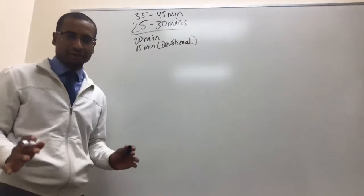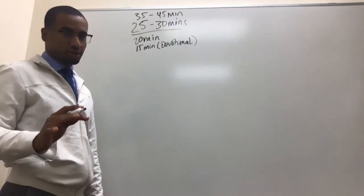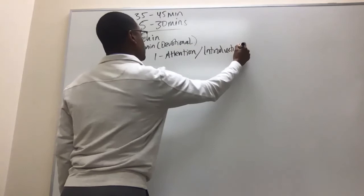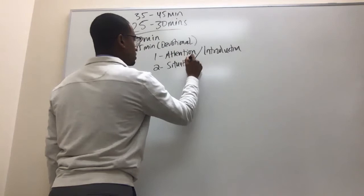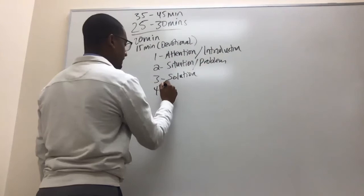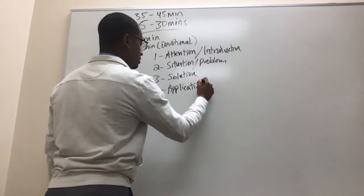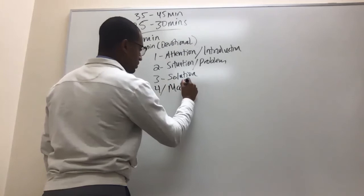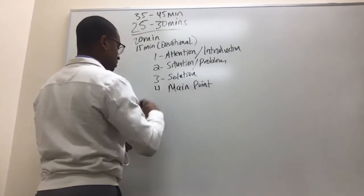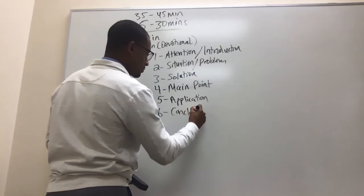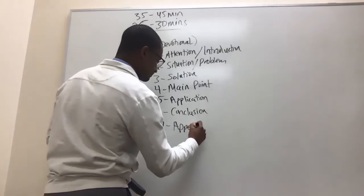This is how you put it together. These are the seven parts of a sermon. First, you have the attention, or what we know as the introduction. Two, the situation or problem. Three, the solution. Four, the main point. Five, application. Six, conclusion. Seven, appeal.